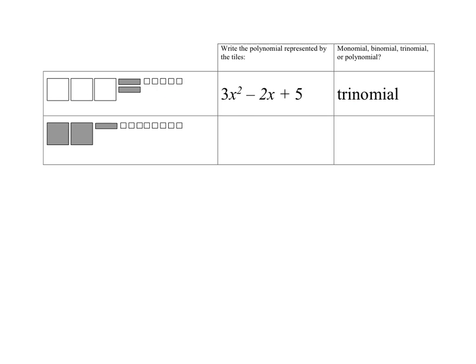Let's look at the next example. Here we have 2 of these squares, but since they're shaded, these are negatives, so we write down negative 2x squared. Then we have this rectangle, which is also shaded, so it's a negative x — we write down subtract x. Finally, we count up all the little unit tiles and we see there are 8 and they're unshaded, so they're positive — we write down plus 8. Again, we have 3 terms and 3 different types of tiles, so this is a trinomial.